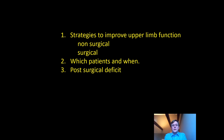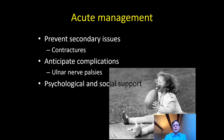Moving on, we'll talk about strategies to improve upper limb function — non-surgical and then surgical — and then who, where and when. For acute management it's really about support. The worst scenario is that secondary complications limit our potential: pressure sores that prevent the patient from sitting out make it very difficult to rehabilitate the arms. Contractures are a death to function — you can restore motors, but if you don't have joints that move they're not functional. Positioning to protect the ulnar nerve is also important.